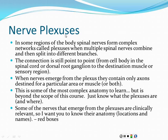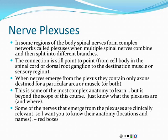There are four plexuses, which we'll discuss in a minute. The connection is still point to point — there's a cell body in the spinal cord and its axon goes to just one place in the body. But in these plexuses, the nerve that the axon travels through can change; it may travel through multiple different nerves to arrive at its destination.